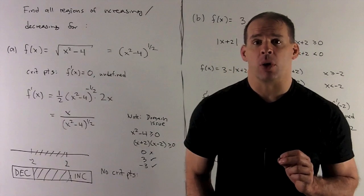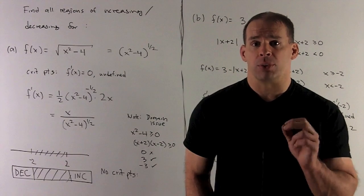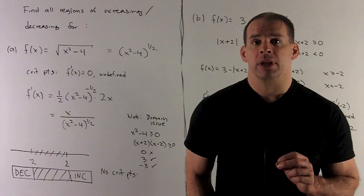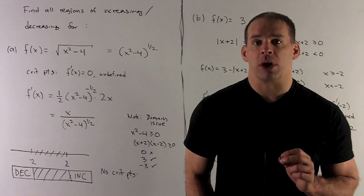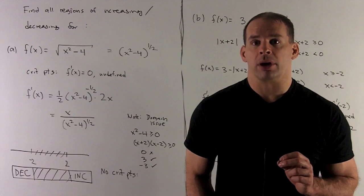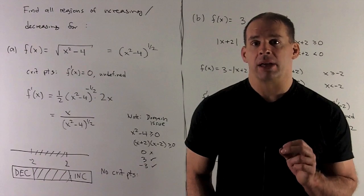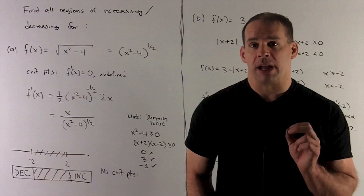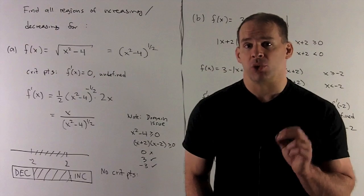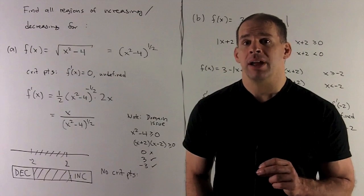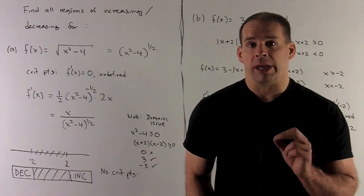Before starting any work, notice that we have a domain issue here. We can't take the square root of a negative number, so we need to check where x squared minus 4 is greater than or equal to 0 — that will be our domain.